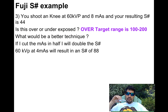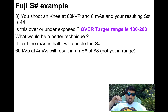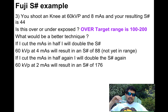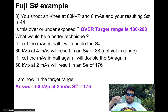What would be a better technique? I can cut my mAs in half — I'm not doubling it. Cutting in half should double the S number, because I'm overexposed and want to cut my mAs down. So if at 8 mAs I got 44, then at 4 mAs I should get 88. I'm not yet in range. I'll cut it in half again and double the S number again. Now I'm at 2 mAs and I should have an S number of 176. That's in range.